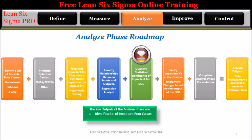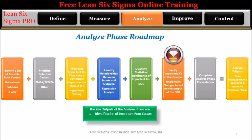Step 5: Quantify statistical significance of important X's — identify the synergy of important inputs, X's, on the output, Y, by implementing design of experiments, DOE. Step 6: Verify important X's at the gemba. Implement changes based on the output of the design of experiments. For important main effects, implement changes in the process, and perform trial runs to verify changes are effective and do not have an adverse impact on the process.